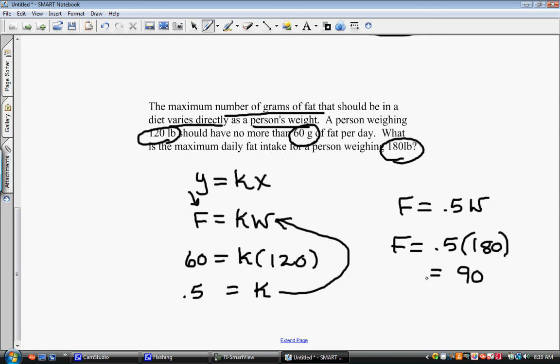So .5 times 180 is 90. So the daily fat intake, a maximum daily fat intake for a person weighing 180 pounds would be 90 grams of fat per day. We can use this variation equation to figure out things like that.